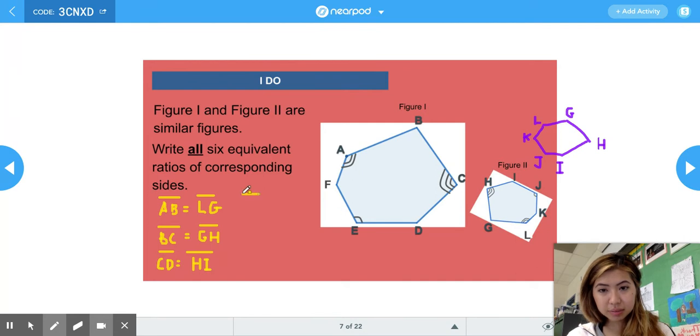DE corresponds to IJ, EF corresponds to JK, FA corresponds to KL.